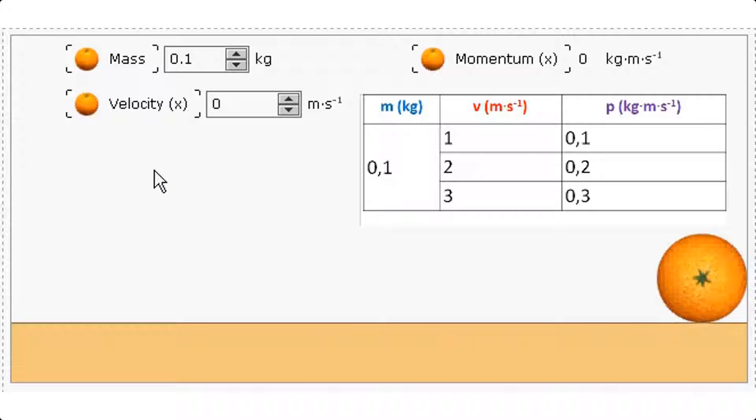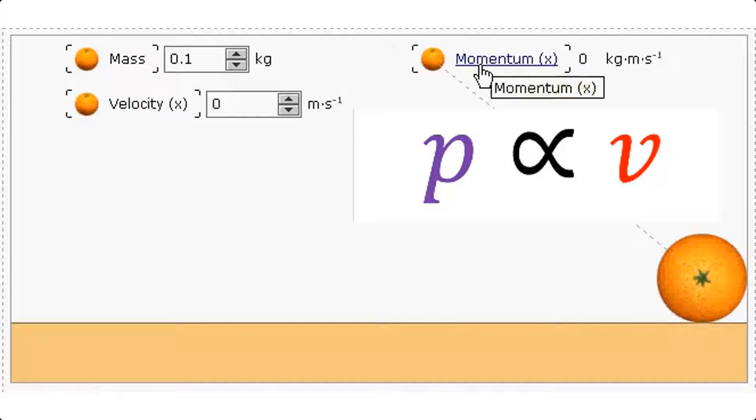So from this what do you notice is the relationship between velocity and momentum? As velocity is increased, momentum increases for a constant mass. Velocity and momentum are directly proportional.